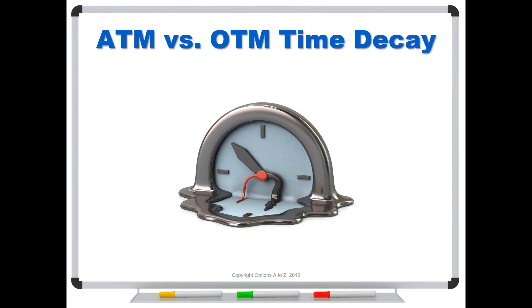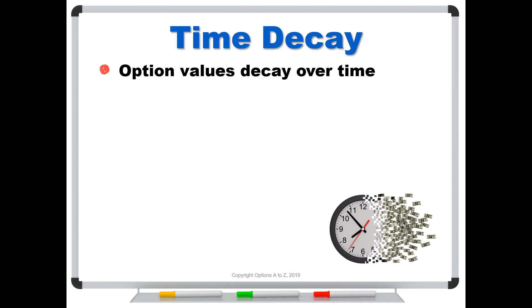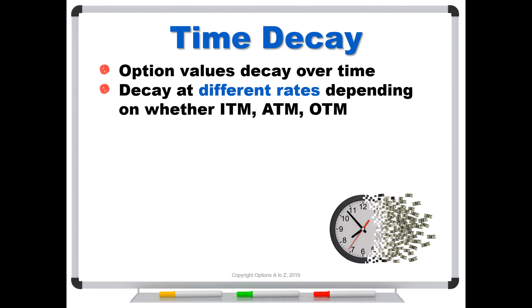The problem is that when they read books and websites about options, they'll see the time decay curve and assume that all options decay according to that curve — and that's simply not true. Whenever you see that time decay curve, it's for at the money options only. Options decay at very different rates when you're talking about out of the money and in the money. The key point I want you to get from this video: yes, all options decay, but the rate depends on their moneyness — how far in or out of the money they are.